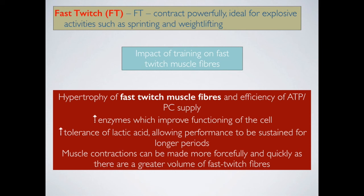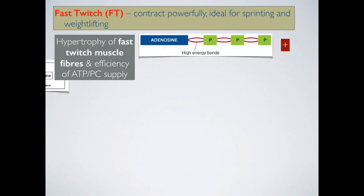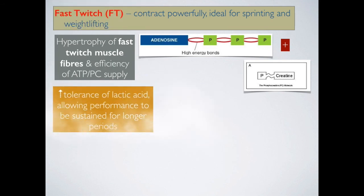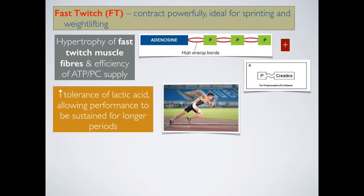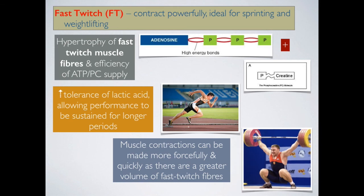Muscle contractions can be made more forcefully and quickly as there is a greater volume of fast-twitch fibres. When we train specifically — training the anaerobic energy systems and applying progressive overload by gradually increasing intensity with each session — it leads to hypertrophy of those muscle fibres and more forceful, powerful contractions. The fast-twitch fibres use the ATP-PC system for energy supply, and increased tolerance of lactic acid results from training the anaerobic systems. This benefits sports like sprinting and weightlifting.